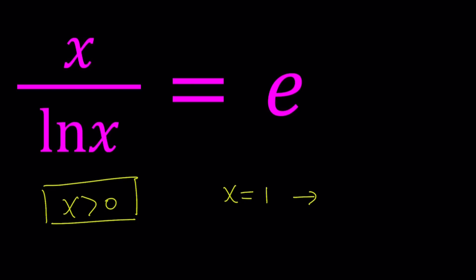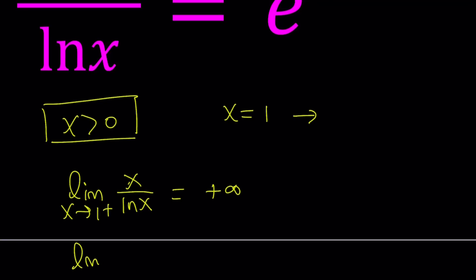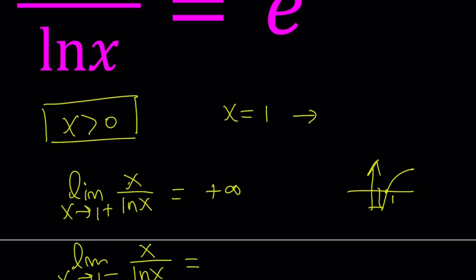Let's look at it from a more sophisticated angle. If x approaches 1 from the right, f of x which is x over ln x is going to give us a positive number divided by positive 0, which is going to be positive infinity. And if the limit as x approaches 1 from the left: if x is less than 1, the y values of ln x are going to be negative, so we get positive 1 divided by negative 0, which approaches negative infinity. This basically means that we have a vertical asymptote at x equals 1.